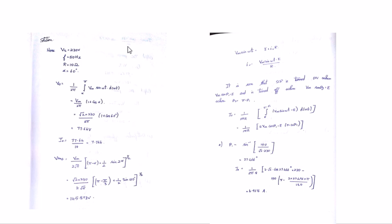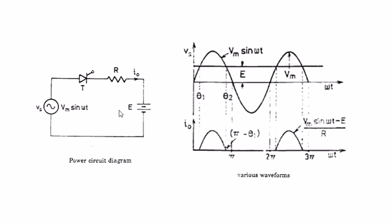Now moving to the second question: A DC battery is charged through a resistor. Derive an expression for the average value of charging current in terms of Vm, assuming the SCR is fired continuously. For an AC source voltage of 230 V, 50 Hz, with R = 8 Ω and E = 150 V, find the average charging current, the power supplied to the battery, and the power dissipated in the resistor. Here is the solution, and this is the final waveform created after finding all the solutions.